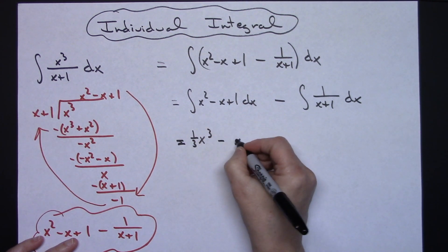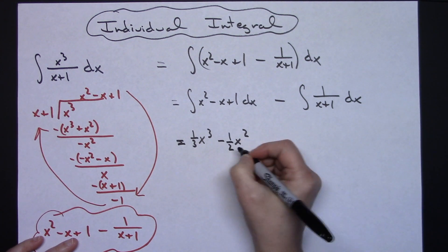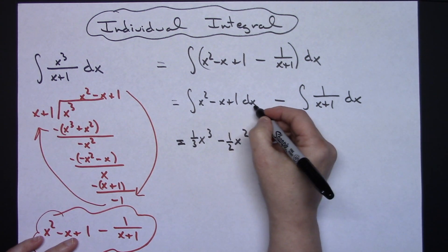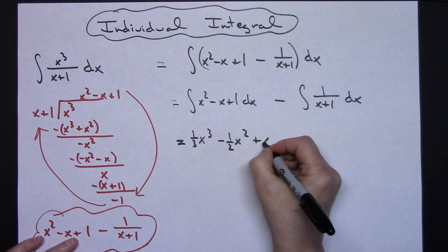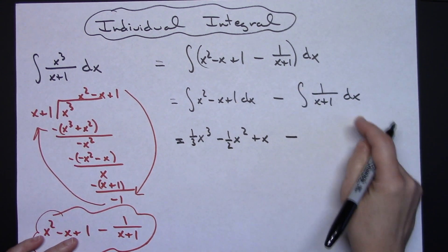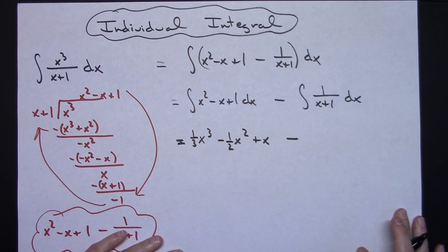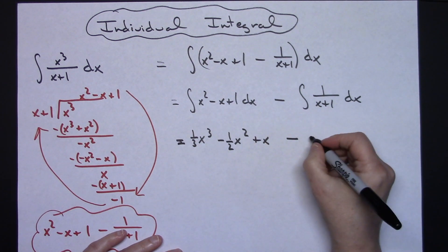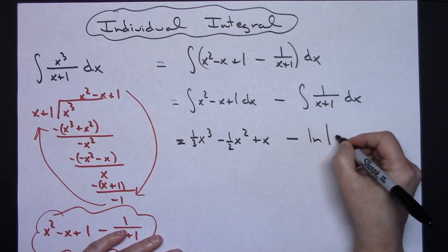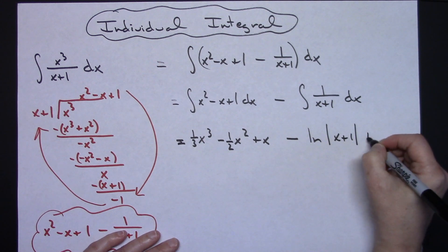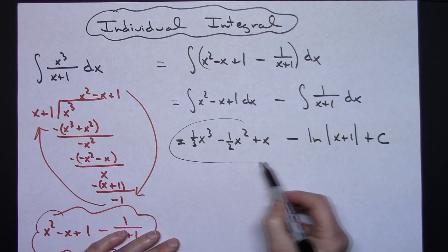Adding one to the exponent here will give me an X² with a one-half out in front. Integrating one with dx is going to give me an X. Then minus, hopefully you recognize this being the natural log of absolute value, so natural log absolute value of X+1, and then a +C.